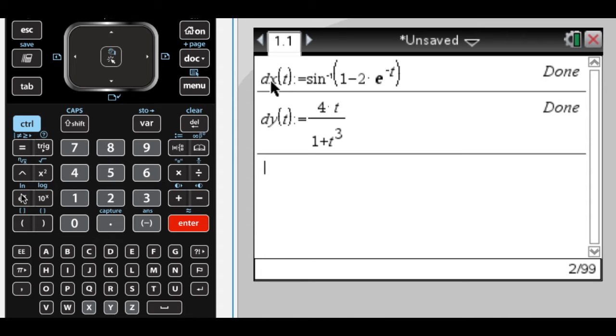So the first question is find the acceleration vector at t equals 2. All right, so I know that to get that, what I need is the second derivative, or the derivative of dx dt at 2.